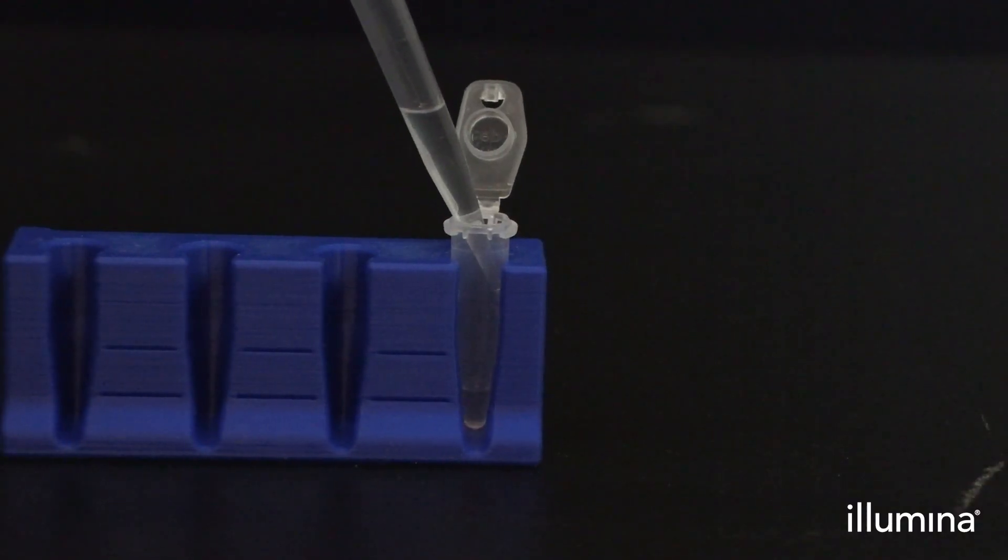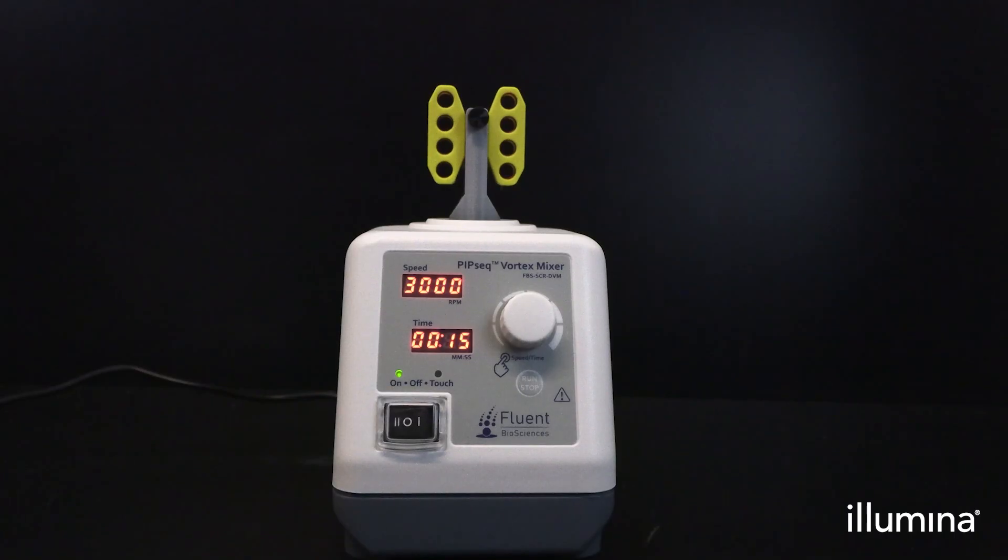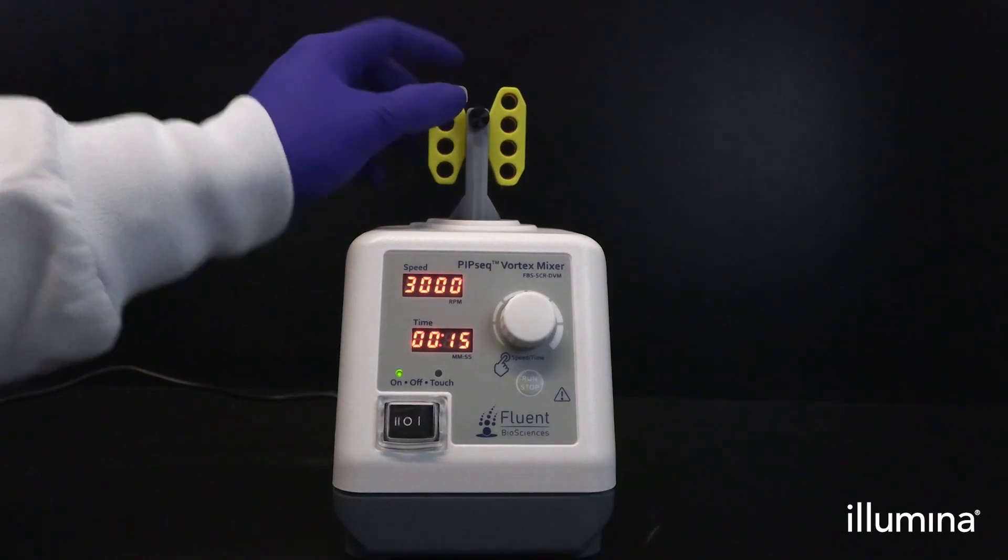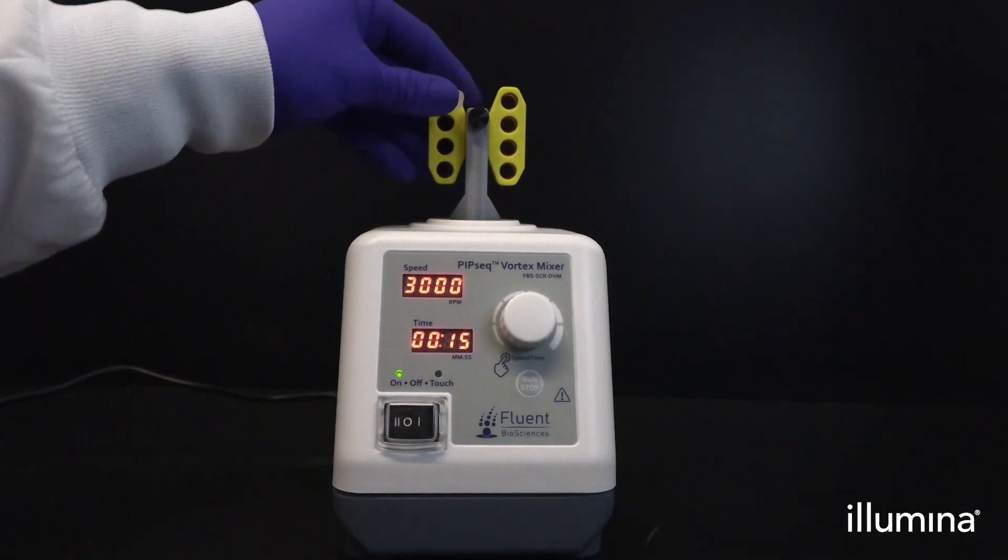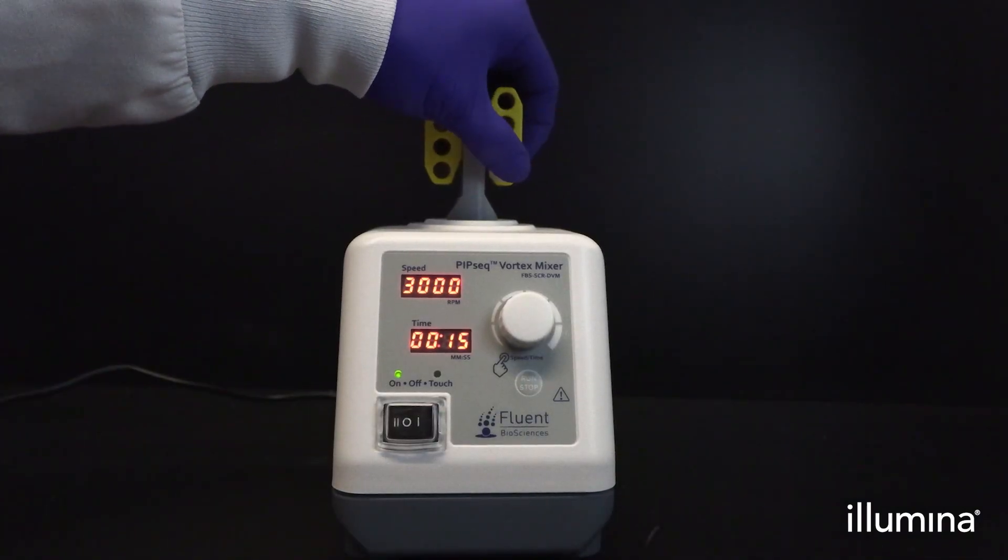Next, add 280 microliters of partitioning reagent down the sidewall of the pip tube. Tightly cap tubes and place in the rotating vortex adapter in the horizontal configuration. Ensure the tubes are fully inserted into the adapter.